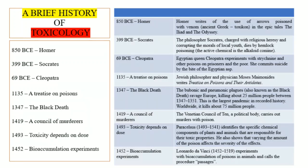Next, 399 BCE: the philosopher Socrates was charged with religious heresy and corrupting the morals of local youth, and died by hemlock poisoning. Hemlock is a herb, and the active chemical extracted from it was the alkaloid coniine. This is how Socrates was poisoned.